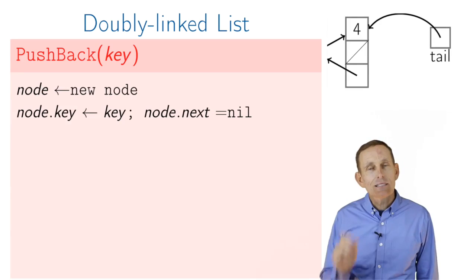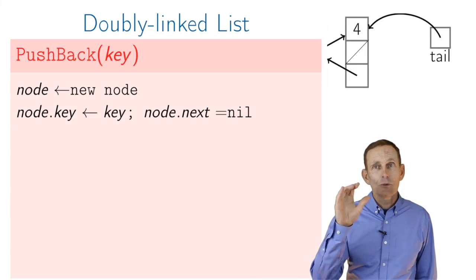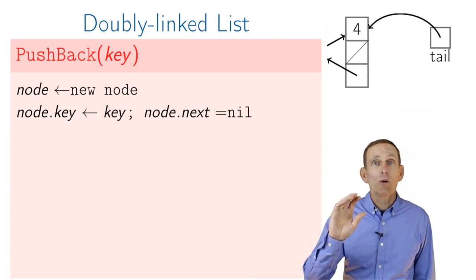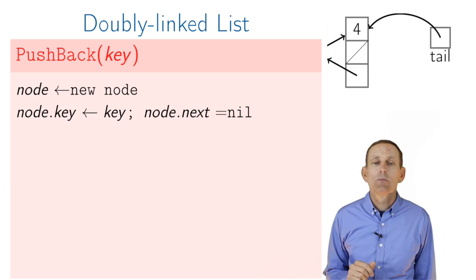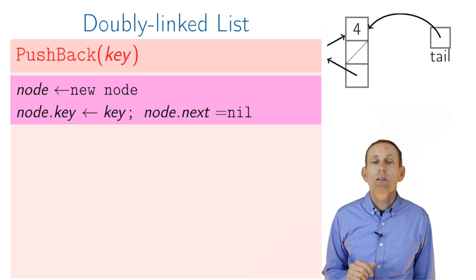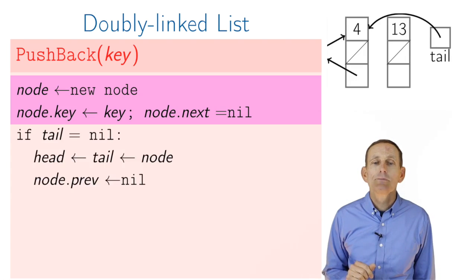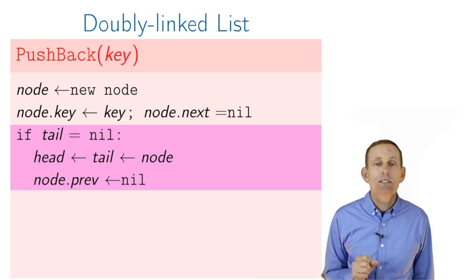So if we have a doubly linked list, it's slightly more complicated, our code, because we've got to make sure to manage both prev pointers as well as next pointers. So if we're pushing something in the back, we'll allocate a new node. If the tail is nil, which means it's empty,